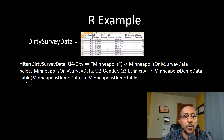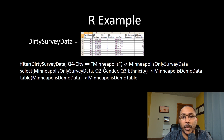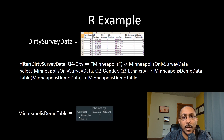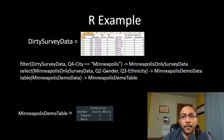The last step in this small example is to create a table of gender and ethnicity. You use a 'table' function on 'minneapolis_demo_data' — which only includes gender and ethnicity columns for Minneapolis respondents — save the result as 'minneapolis_demo_table,' and it produces a cross-tabulation of gender and ethnicity.